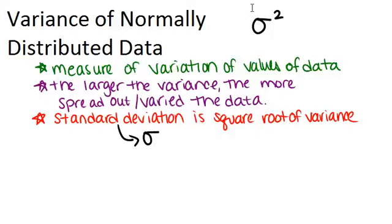By the way, this symbol is a Greek letter called sigma. And we use it for both variance, except with a squared with it, and for standard deviation.